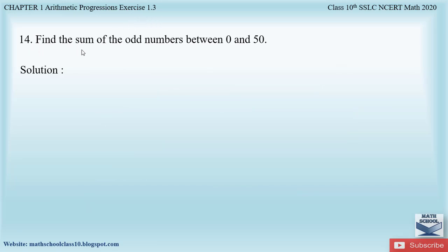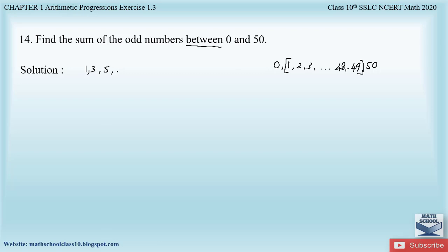Now question number 14 from Exercise 1.3 says: Find the sum of the odd numbers between 0 and 50. Since they say 'between' 0 and 50, we do not include 0 and 50. We consider terms from 1 to 49. The odd numbers are 1, 3, 5, and so on, with 49 being the last odd number.